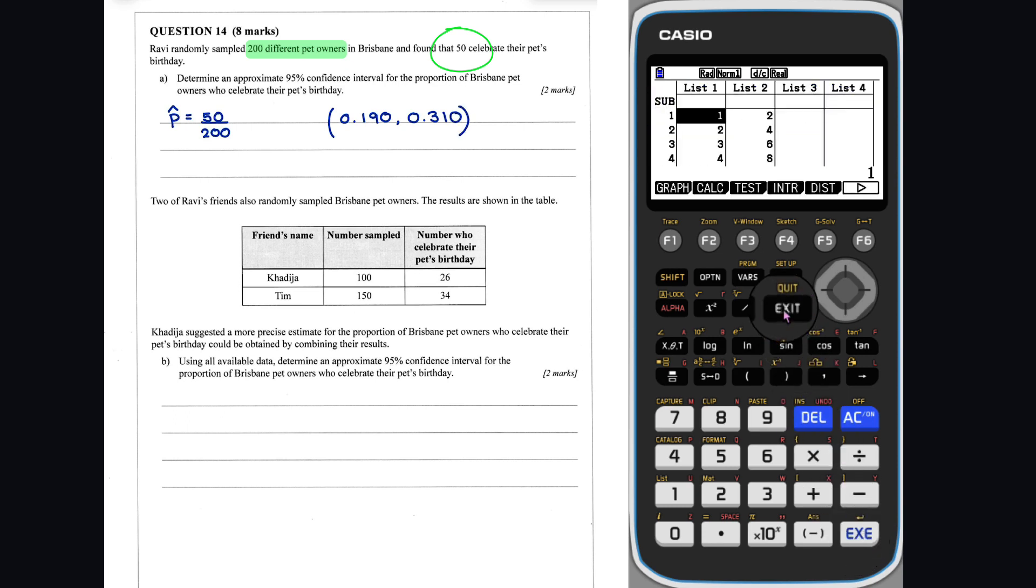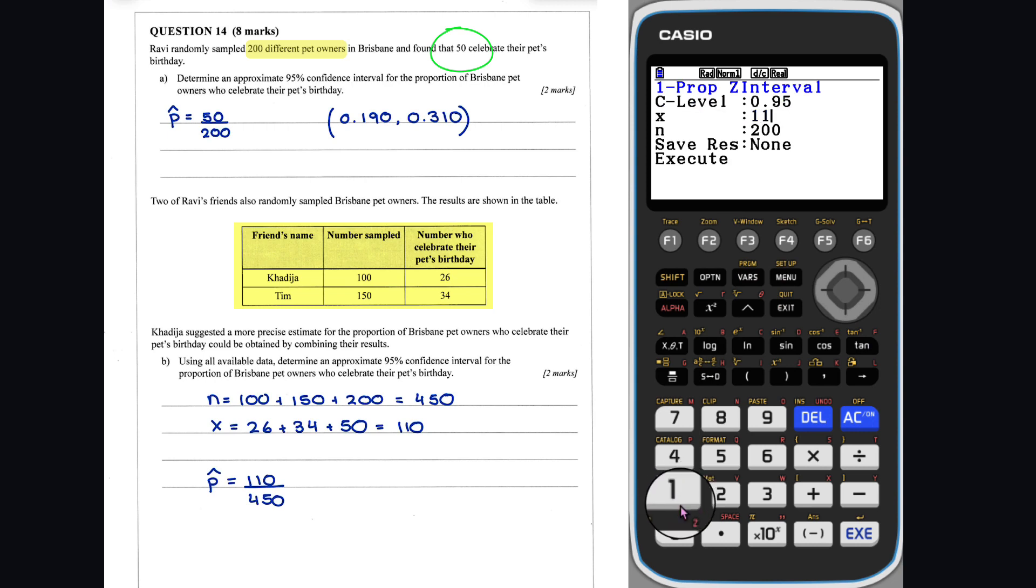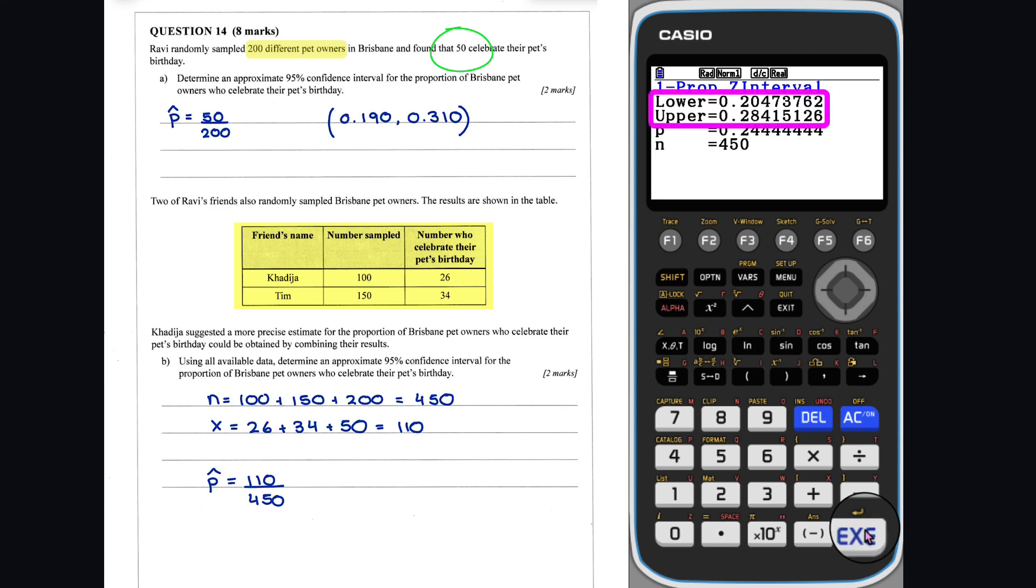Question 14 Part B: Ravi's friends have also randomly sampled Brisbane's pet owners. To utilize all the data available, we can combine the three surveys into one big survey. The total number of pet owners in the survey will be... The number of people who celebrated their pet's birthdays is... And so, the sample proportion of people who celebrated their pet's birthday is... Entering these values into the calculator, we get a 95% confidence interval with a lower bound of 0.2047 and an upper bound of 0.2841.